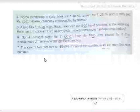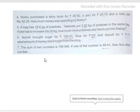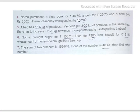Exercise 4.3, Question number 4. Narbu purchased a storybook for rupees 45.50, a pen for rupees 25.75, and a notebook for rupees 65.25. How much money was spent by Narbu?